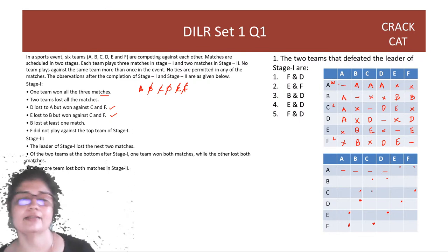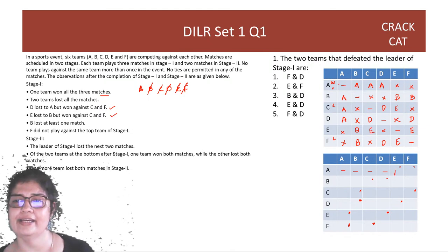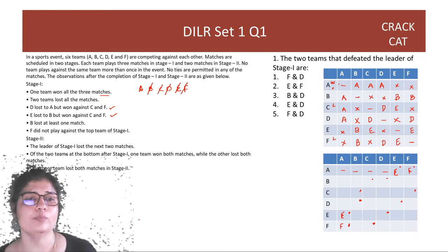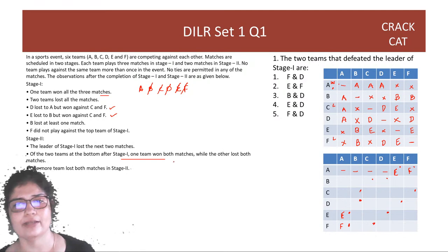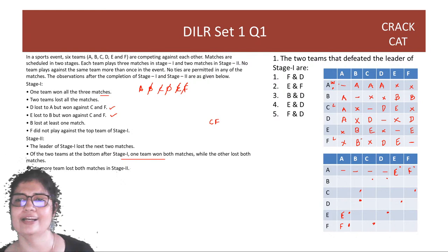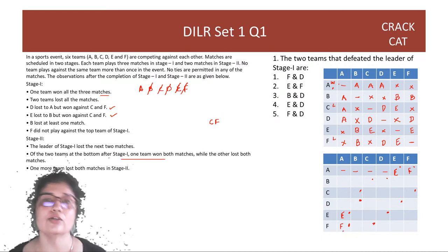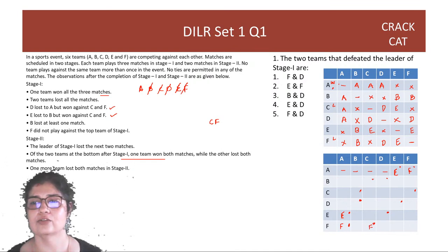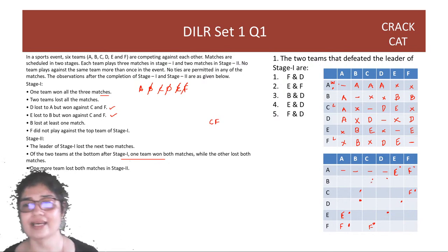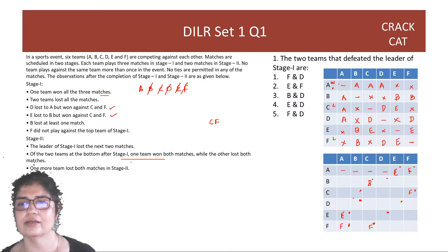The leader of stage 1 was A, who lost the next two matches — so E and F won against A in stage 2. Of the two bottom teams after stage 1 — C and F — one won both matches and the other lost both. F has already won one match against A, so F can't lose both; F must win both. So F beats C, and C loses both stage 2 matches. B wins against C.